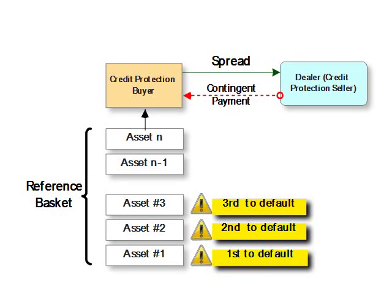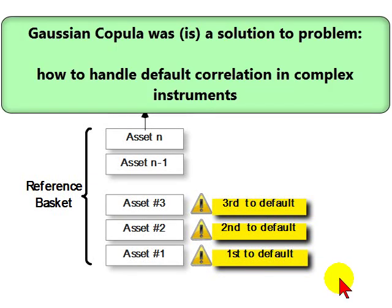Hello, this is David Harper of Bionic Turtle. I wanted to illustrate the Gaussian Copula, which has been blamed as a culprit in the credit crunch. Why has the Gaussian Copula been so much implicated?